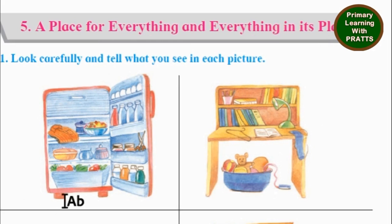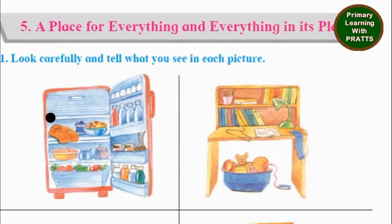The first picture we can see is of a refrigerator. Fridge is the short form for the word refrigerator. The things that are out of place here are a shirt — this shirt is kept in the refrigerator — and a scissor.